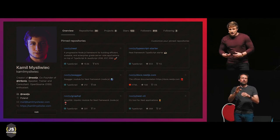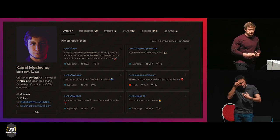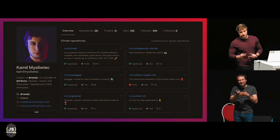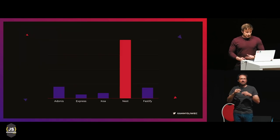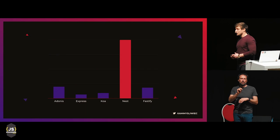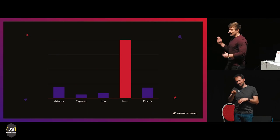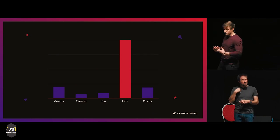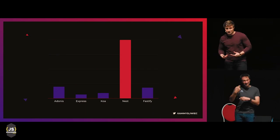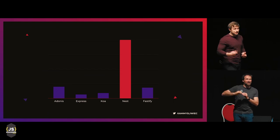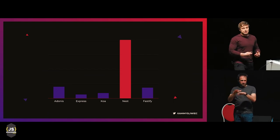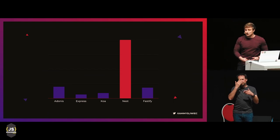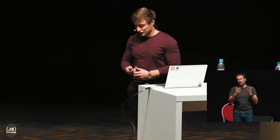I'm the creator of Nest.js, which is basically the fastest rising and the most popular framework for Node.js in 2018. In the last year, we noted 300% growth in popularity in number of GitHub stars, leaving behind any other existing famous library like Express, Koa, Hapi.js — all of them, which is pretty amazing.